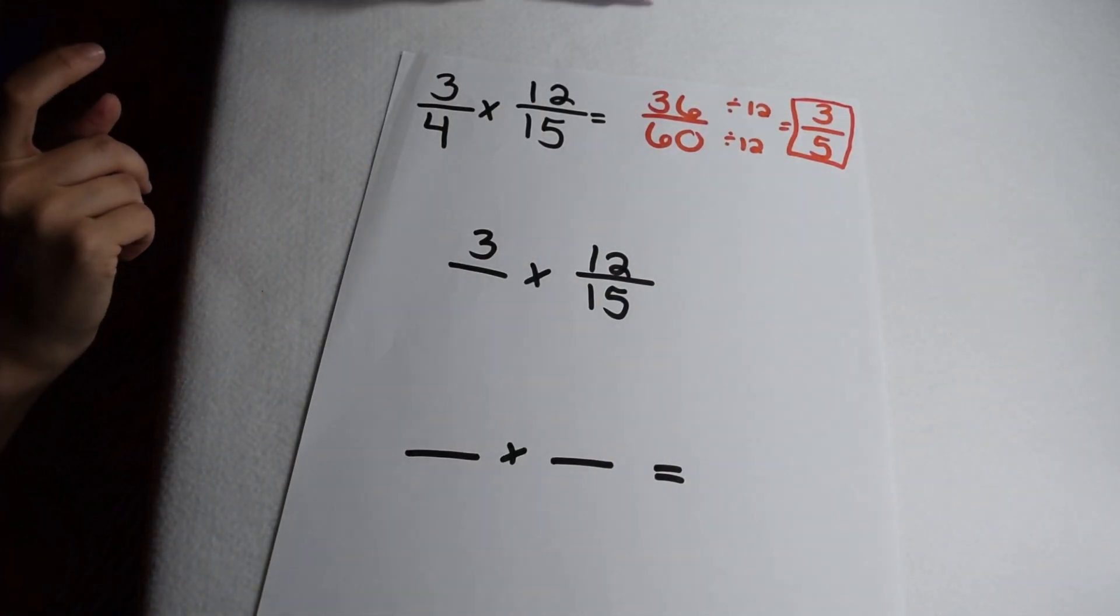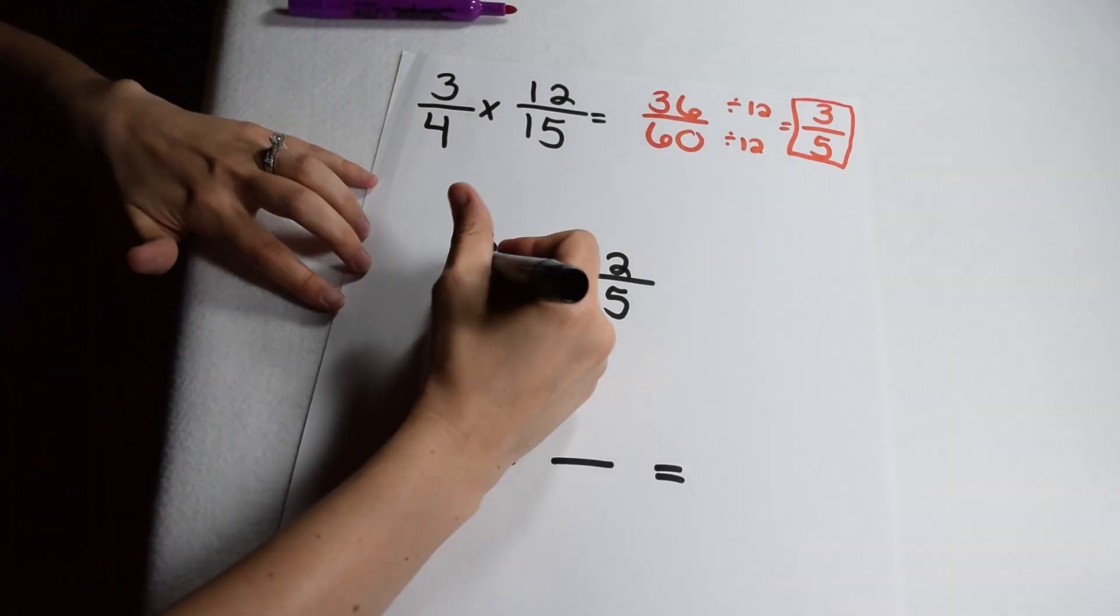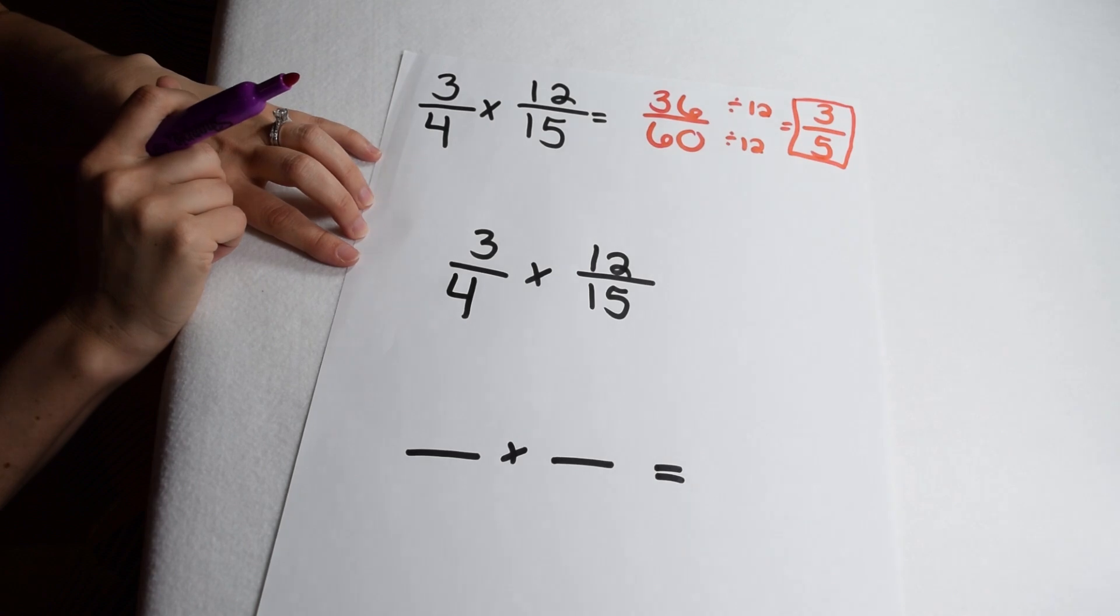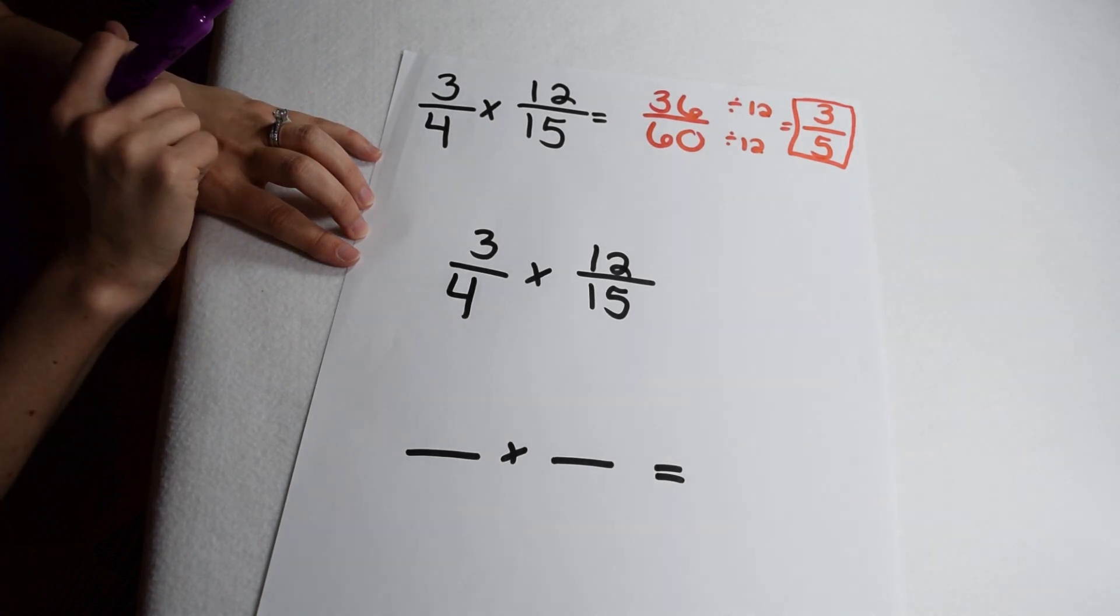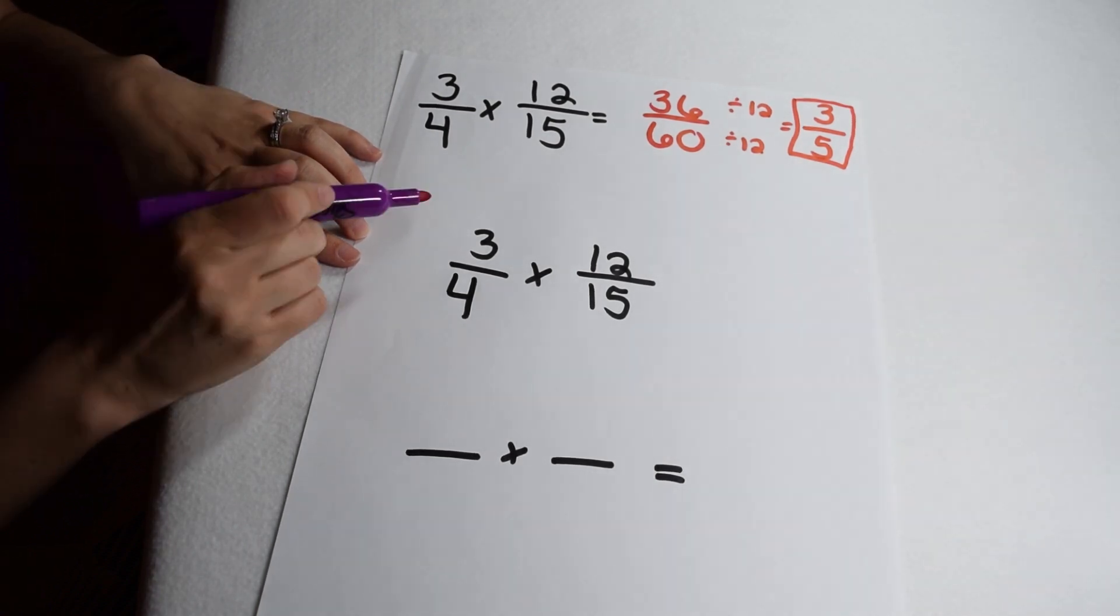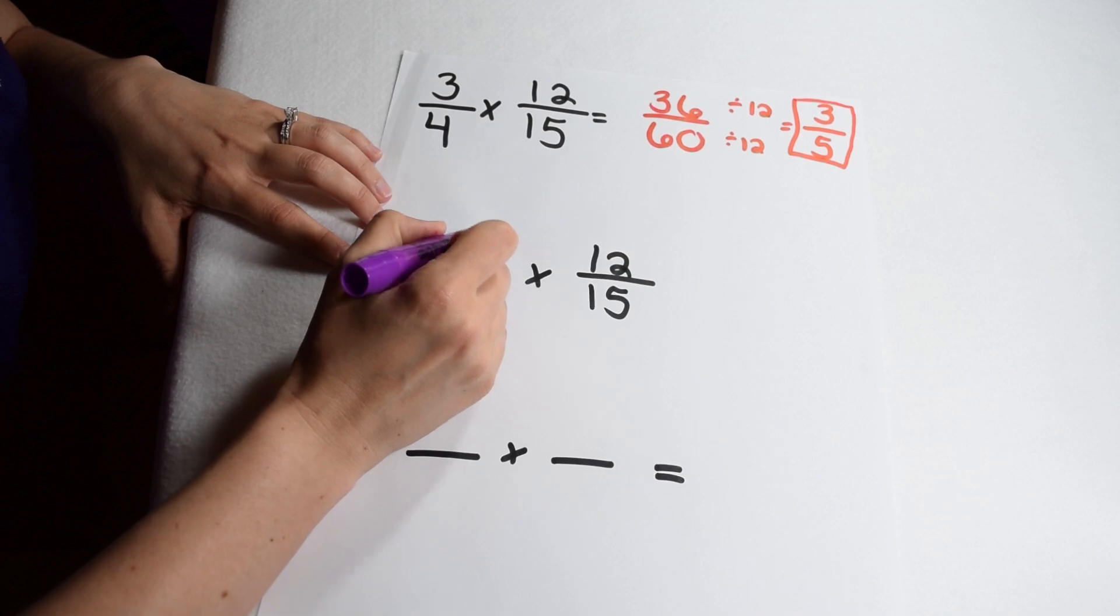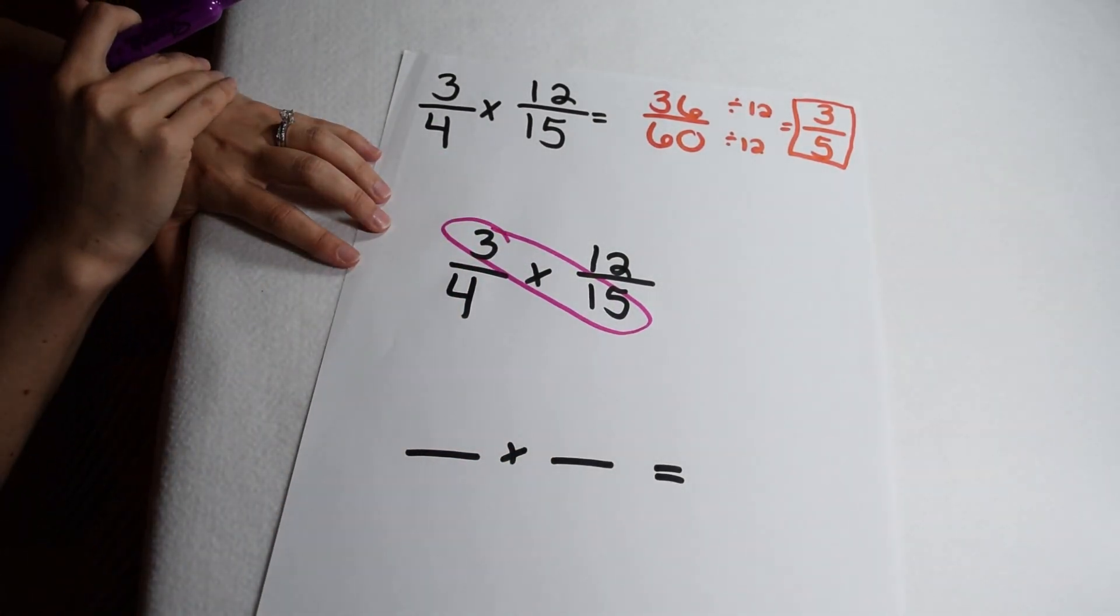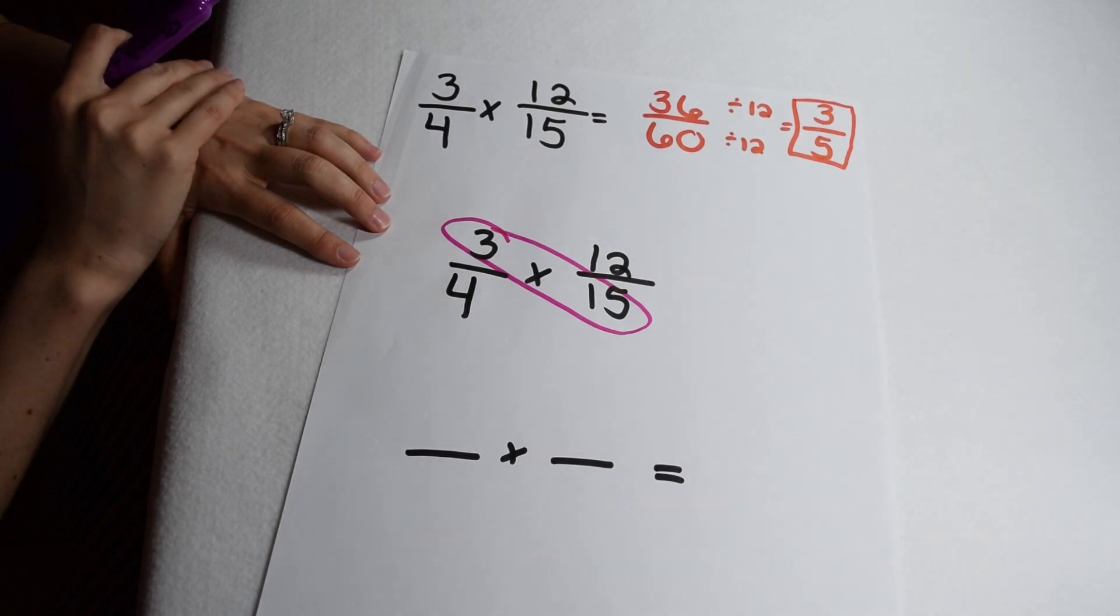That's not too bad if you're good with finding common factors, but there is another way we could do it where we can simplify before we multiply. Using that same problem, three fourths times 12 fifteenths, we're going to look for common factors in our numerators and denominators. Instead of looking just at the fraction though, we're going to look at combinations of numerators and denominators on the diagonal for common factors.